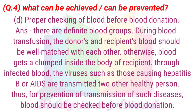D. Proper checking of blood before blood donation. Answer: There are definite blood groups during blood transfusion. The donor's and recipient's blood should be well-matched with each other. Otherwise, blood gets clumped inside the body of the recipient. Through infected blood, viruses such as those causing hepatitis B or AIDS are transmitted to another healthy person. Thus, for prevention of transmission of such diseases, blood should be checked before blood donation.